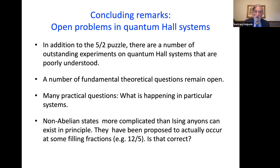All of these would have the same non-abelian properties but different thermal properties, and it's really a great mystery what's going on. To conclude: there are open problems in quantum Hall states, even though quantum Hall systems have been around for some 40 years. In addition to the puzzle of what's going on in five-halves, there are a number of outstanding experiments on quantum Hall systems in higher Landau levels, particularly in other systems that are poorly understood, and some fundamental questions that still remain open. Non-abelian states more complicated than Ising anyons can exist in principle — they've been proposed to occur at some filling fractions, but whether that's correct is not clear. Thank you very much for this honor.